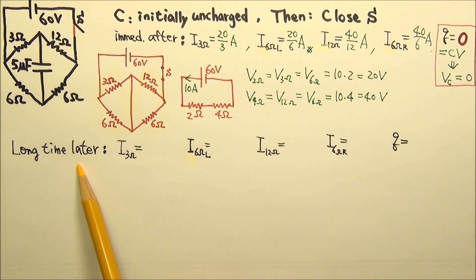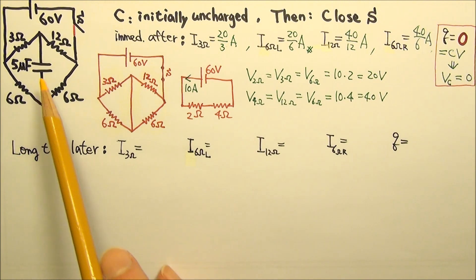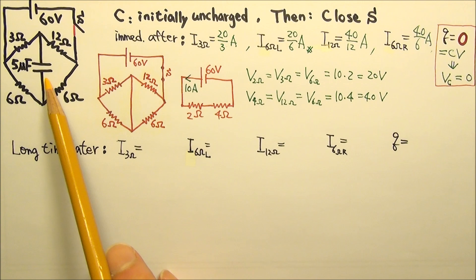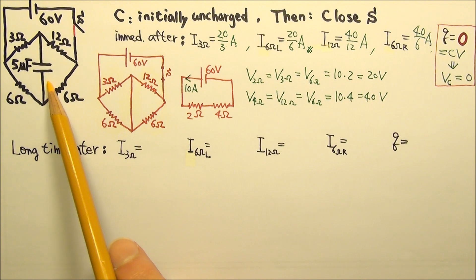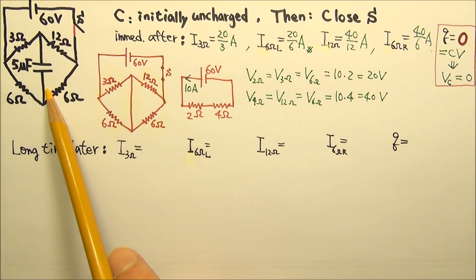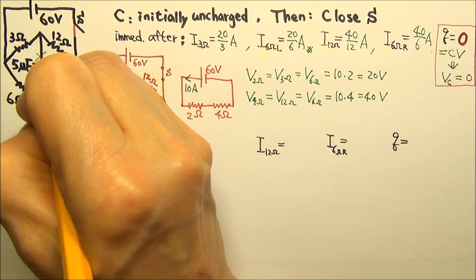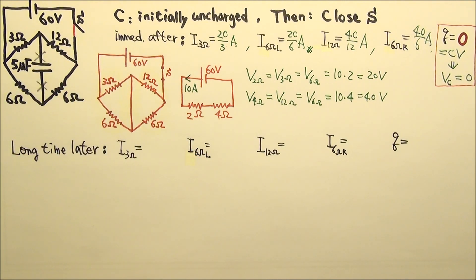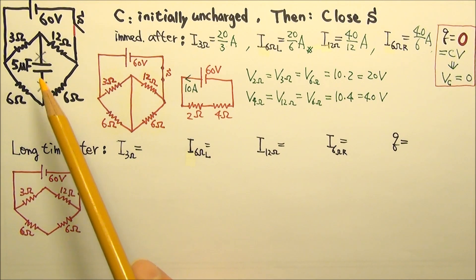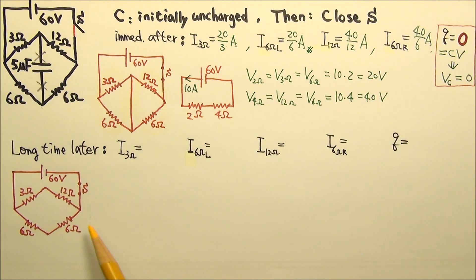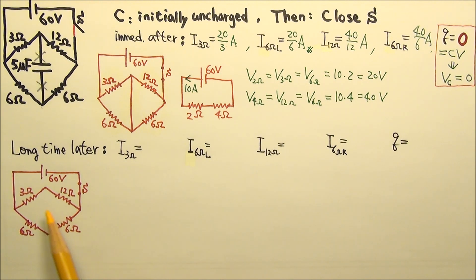A long time after the switch is closed, the capacitor has either finished charging or discharging. There is no more charging or discharging current, so there is no current in the capacitor segment. This means we can cut those wires without affecting anything, because no current flows through them anyway. With the wires cut, the circuit is equivalent to this one: 3Ω and 12Ω are in series, and 6Ω and 6Ω are in series.